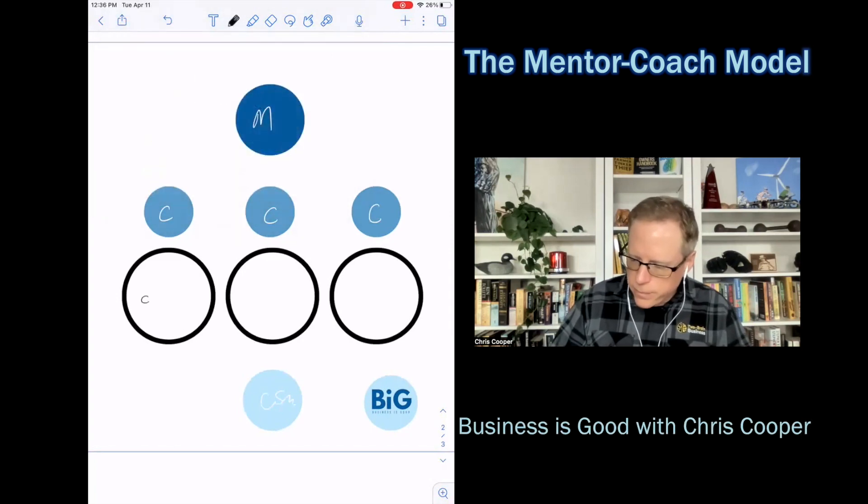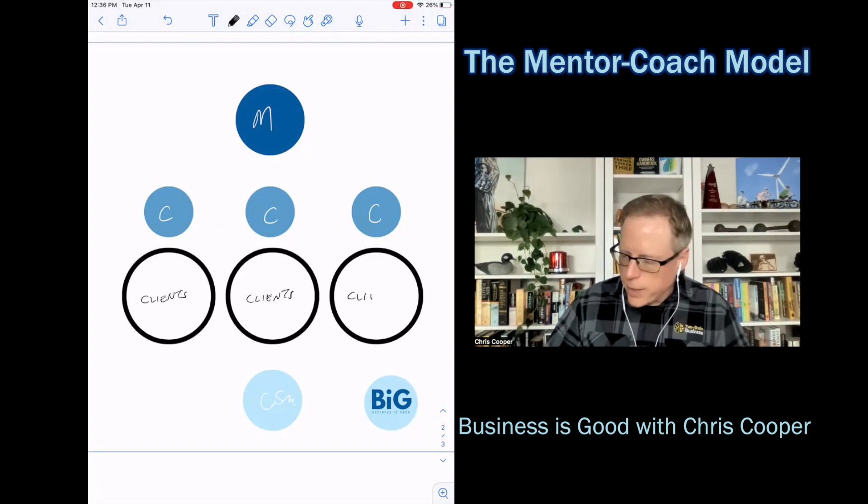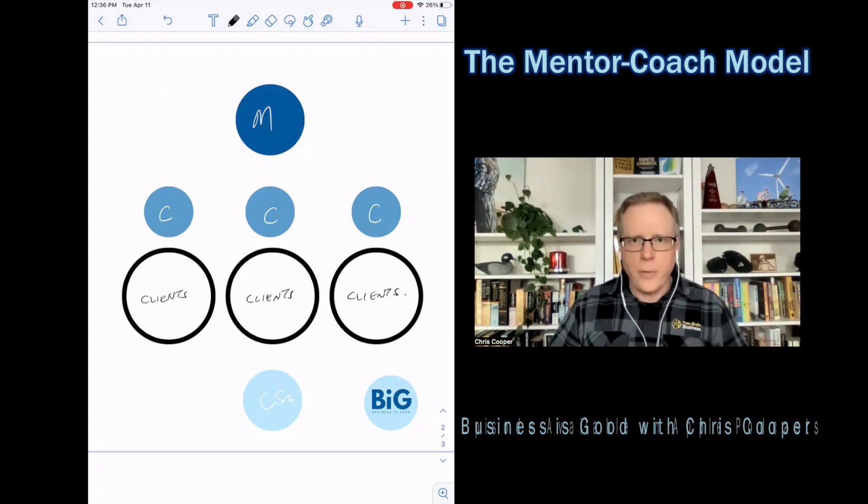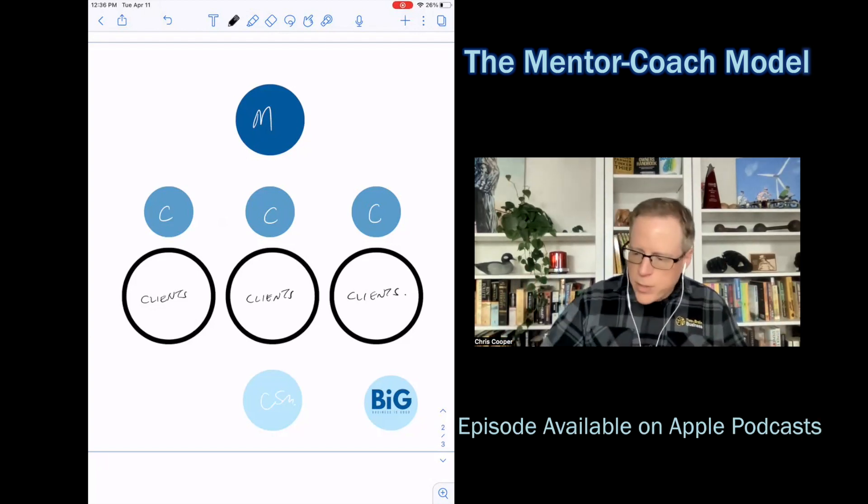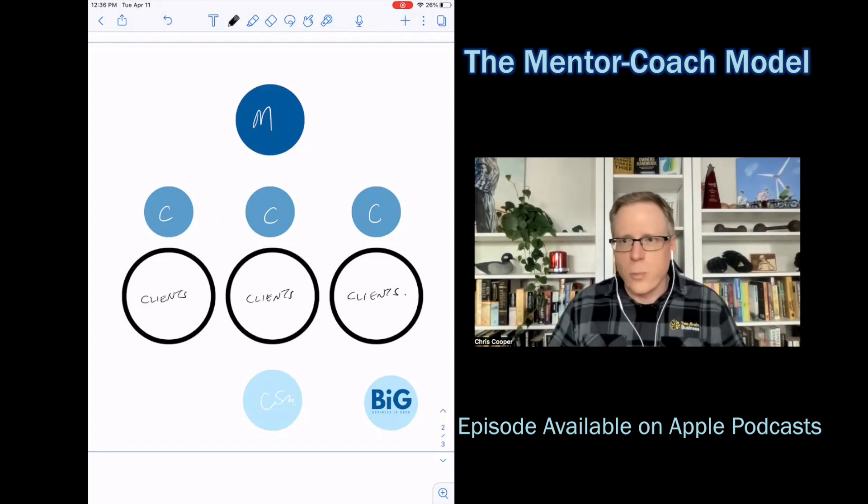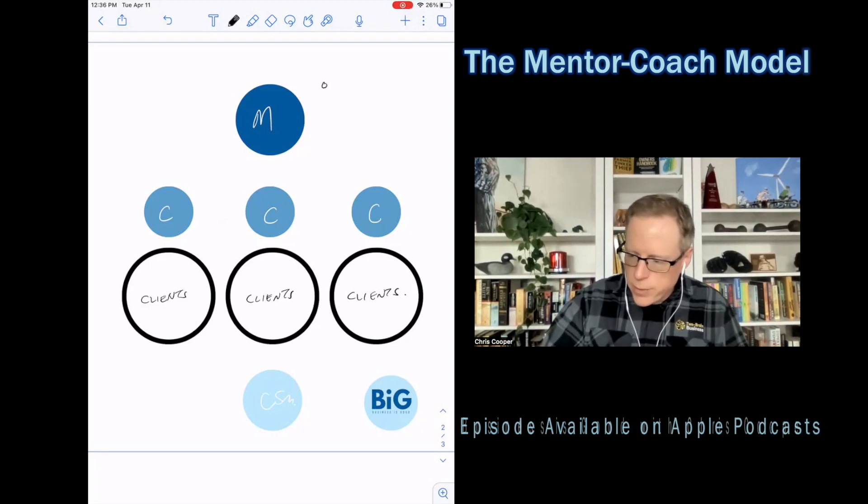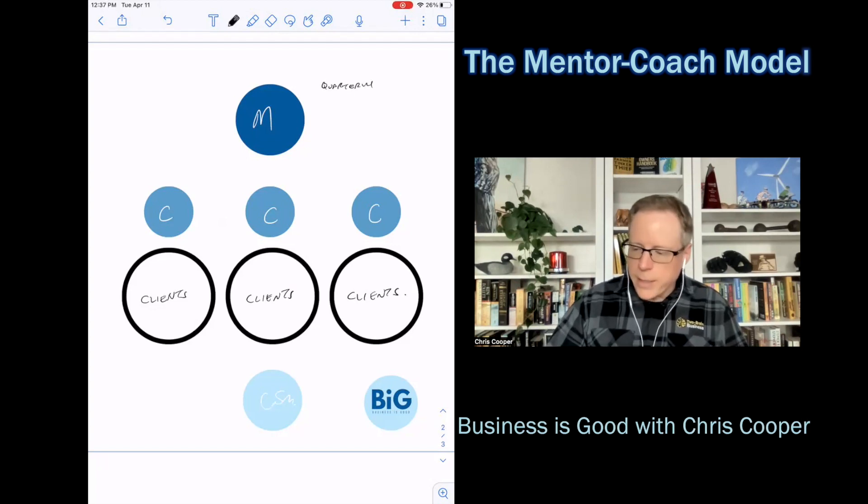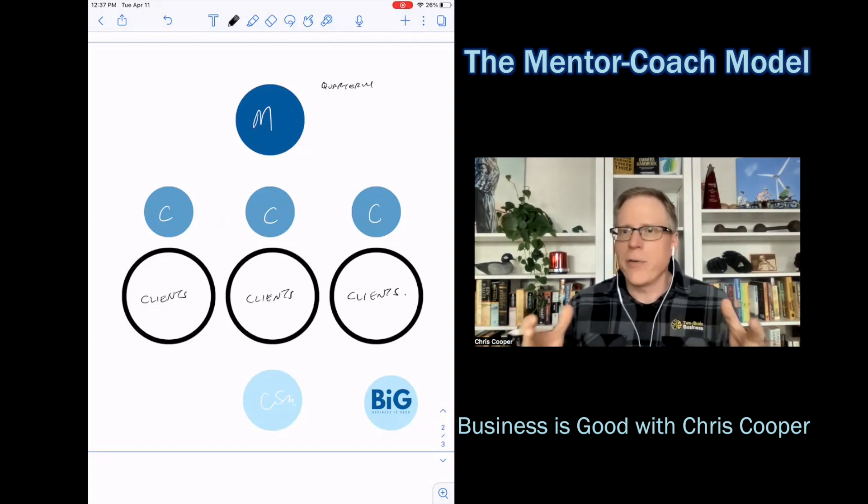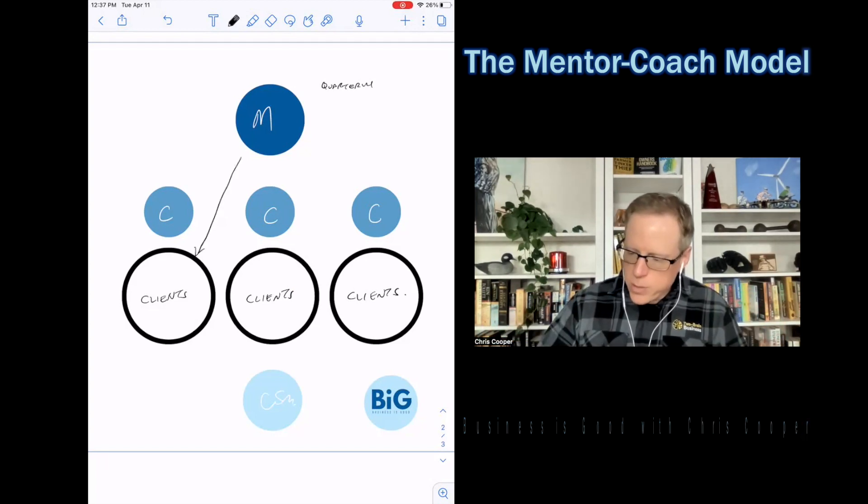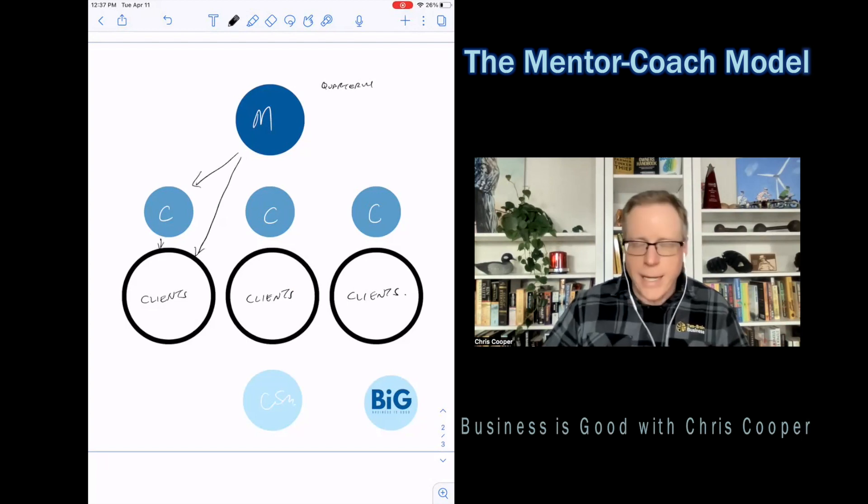So I'm going to put clients here, but right out of the gate, what you see is that the mentor can multiply how many clients are in their program without having to duplicate themselves. Here's how it works. This mentor will sit down with a client about once a quarter. So their delivery is quarterly in person. Anyway, they sit with the client. They create a plan for the next 90 days or the next six week sprint. If you're using simple six or whatever your model is from there, that plan goes to the client and it goes to the coach and it's the coach's job to activate the plan.